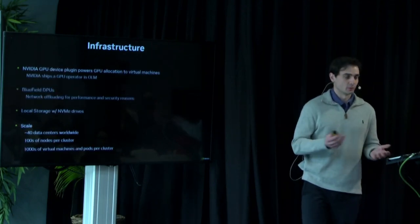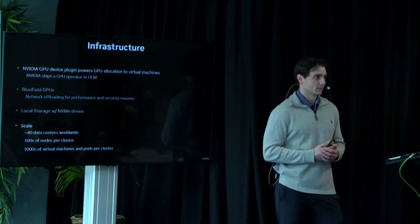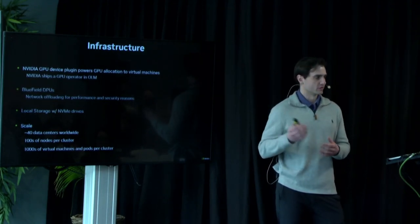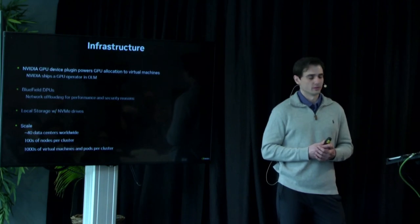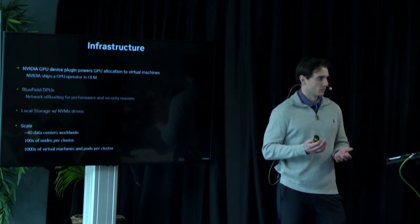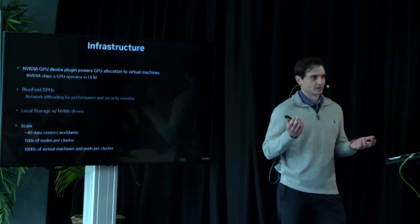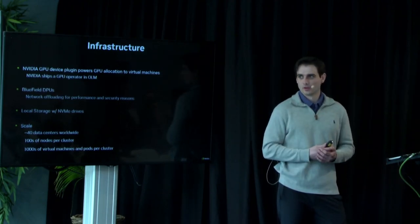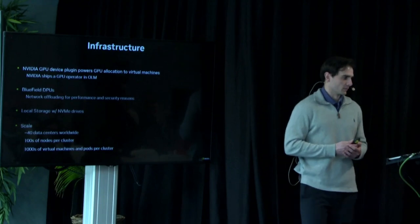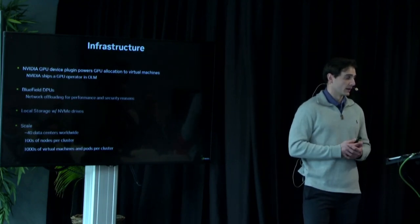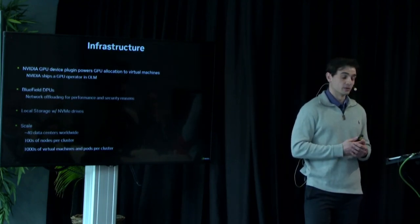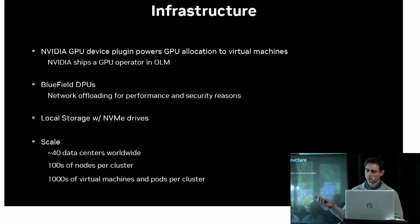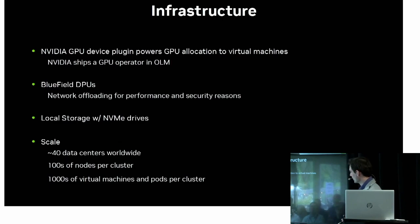Going into more details: we have a device plugin that we use, shipped as part of the GPU operator in OLM. This device plugin is how Kubernetes exposes GPU attachment to a guest. We use that heavily. We also use DPUs for network offloading — for performance reasons, security reasons, and lots of other benefits you get with DPUs throughout our data centers.